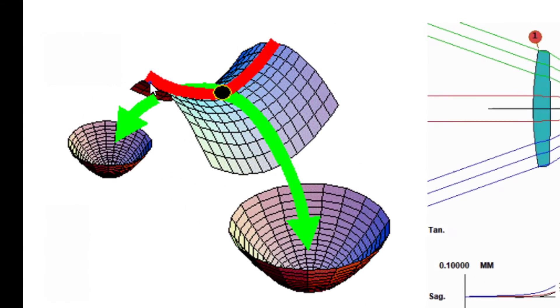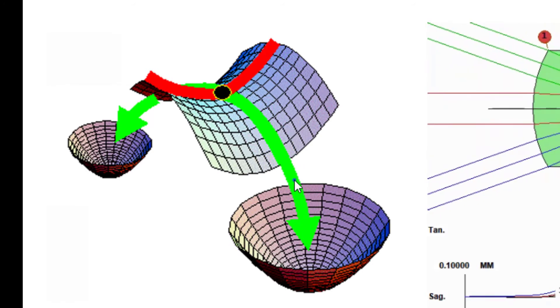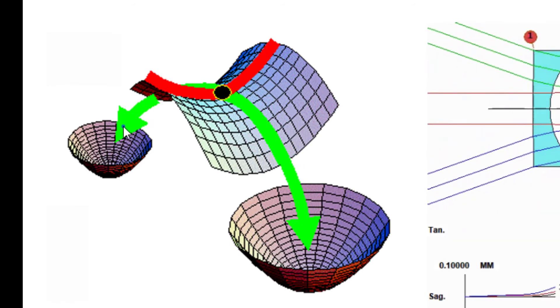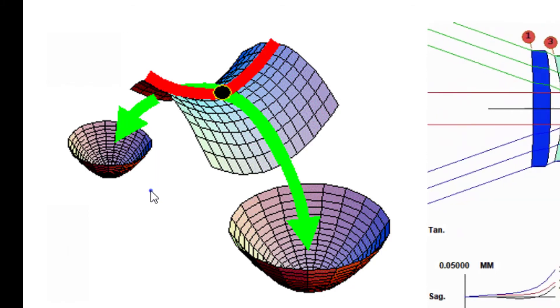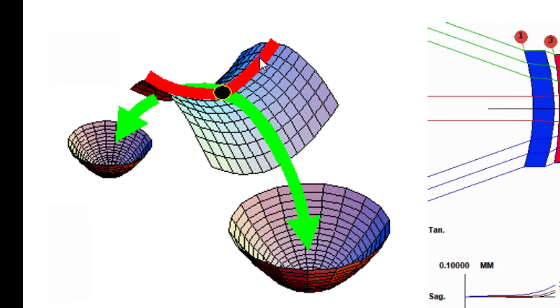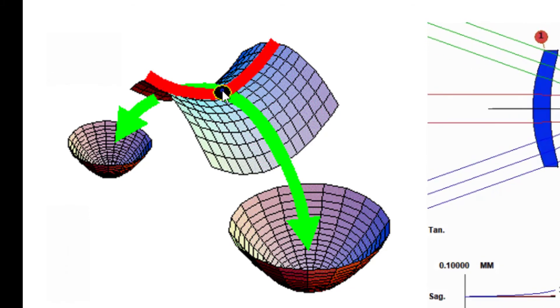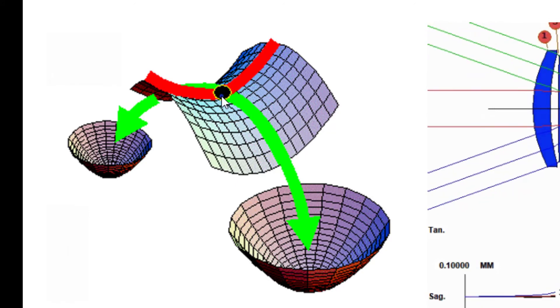A saddle is a shape that curves up in one direction and down in another direction. A lot of times during optical design with the available degrees of freedom in your design, the optimization process may be going along this line and settle at this point, a local minimum, and you think that is the design.